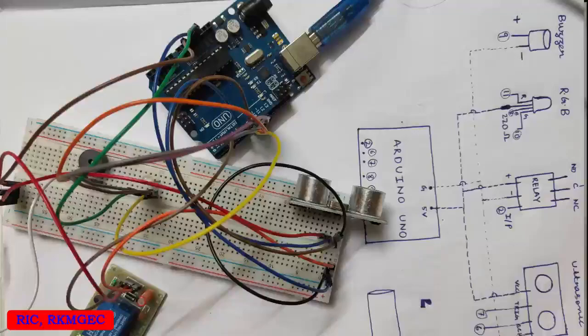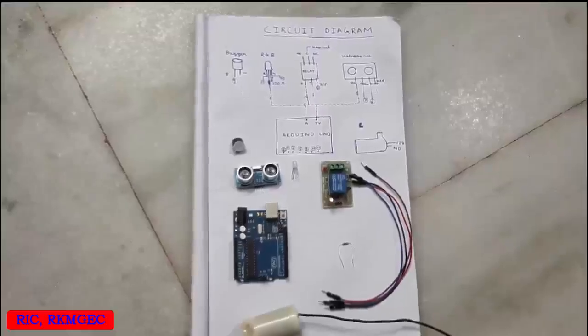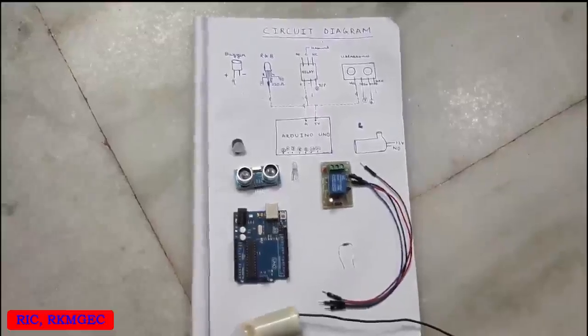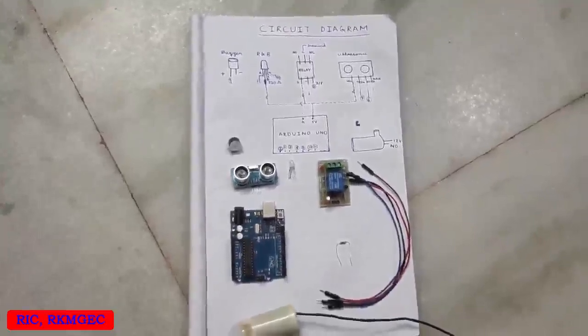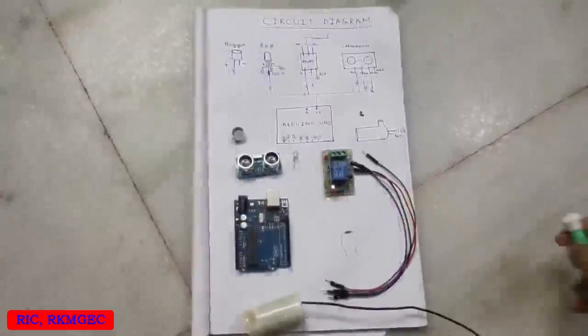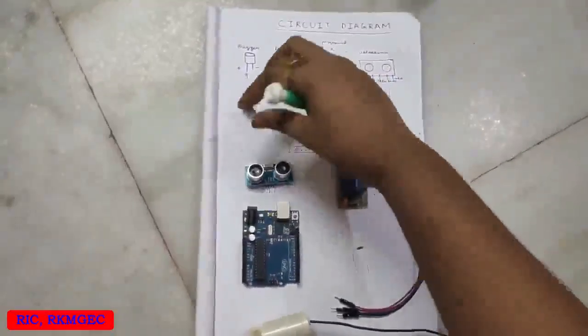Hello friends, in this video we are going to design a simple electronic circuit for making a sanitation tunnel with the help of Arduino. So let's take a look at the circuit diagram. In this project we are using a buzzer.